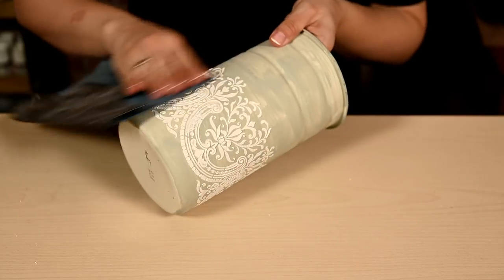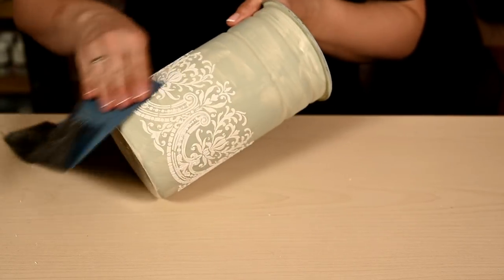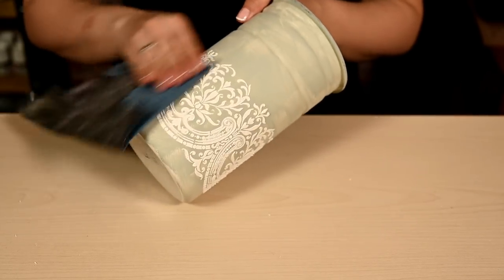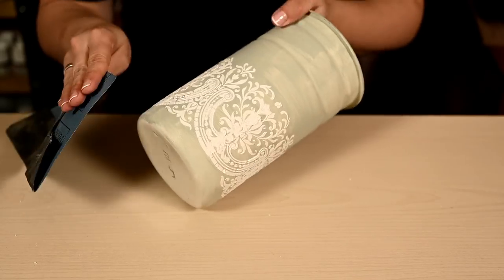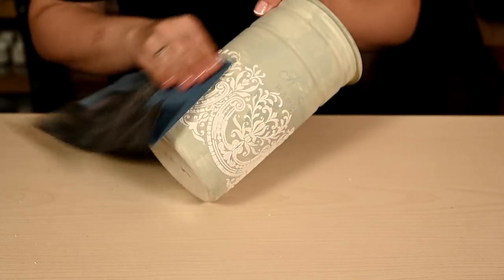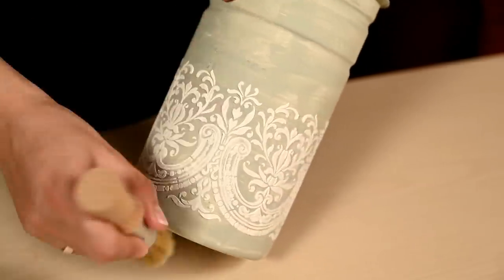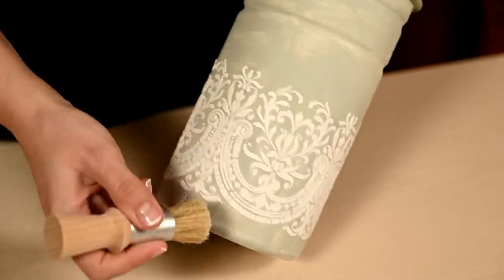After everything dries well I'm giving it a light sand to remove any sharp dips along the edges of the pattern and to smooth everything out a bit. I'm dusting the surface and it's now ready for painting.